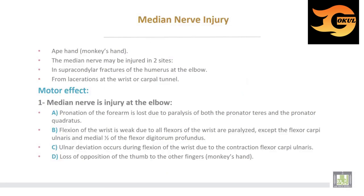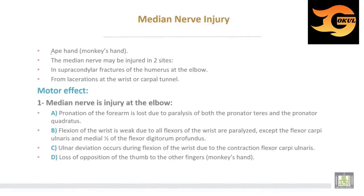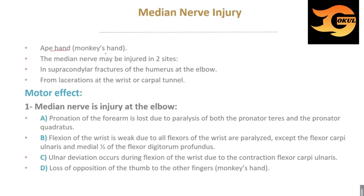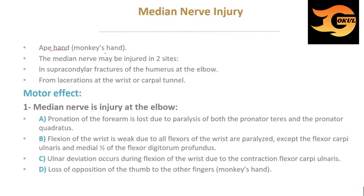Median nerve injury produces the deformity of ape hand or monkey's hand. The median nerve may be injured at two sites: supracondylar fracture of the humerus at the elbow, or from laceration at the wrist, or carpal tunnel syndrome.